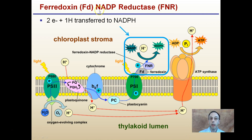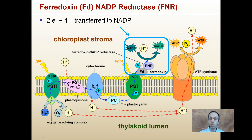Ferredoxin (FD), NADP reductase, and FNR are located here now. Keep in mind the position of the thylakoid and the stroma. We've gone through Photosystem II and the splitting of water, re-energized with light energy, and now we're passing those electrons off. We're moving hydrogen ions across and concentrating them in the lumen. We've just left Photosystem I after absorbing light energy, and now we're transferring those electrons and a hydrogen ion.